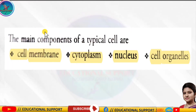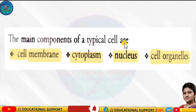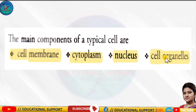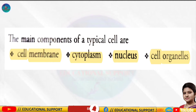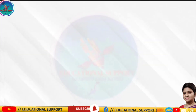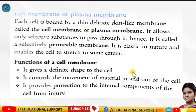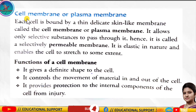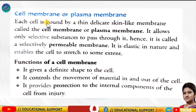The main components of a typical cell are the cell membrane, cytoplasm, nucleus, and cell organs. Today we discuss the cell membrane or plasma membrane. Basically, each cell is bounded by a thin, delicate, skin-like membrane called the cell membrane or the plasma membrane.